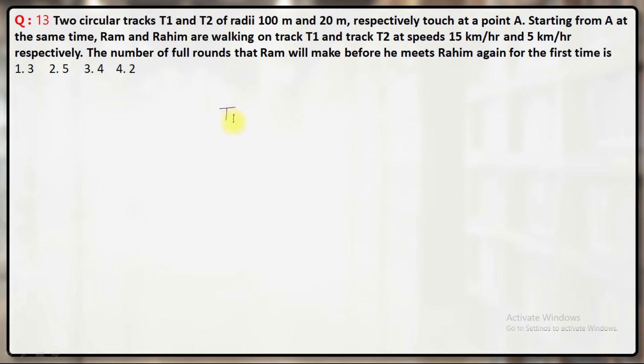So if I say that time taken by Ram by time taken by Rahim, let's try to apply the concept of variations here. Number of rounds - sorry, this is the rounds - rounds taken by Ram by rounds taken by Rahim.